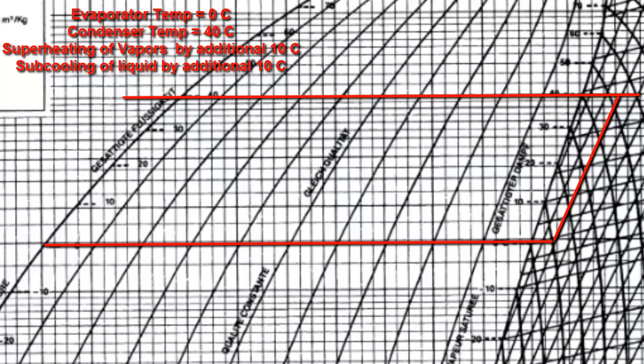We start from the point representing the superheated vapors leaving the evaporator and follow the constant entropy curve all the way to the point where it meets the line for the condenser. We identify that point on the top right-hand side — that will be the location representing the exit of the superheated vapors from the compressor.